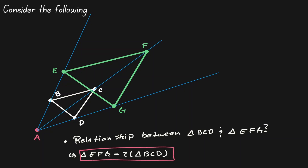But let's understand why that is true. We started by measuring the distance from A to B, and then we doubled that distance. And that was the same thing that happened from A to D — we measured the distance and then doubled it. And that's the same thing that happened from A to C — we found that distance and then doubled it. Because the distance got doubled, the dimension of the object got doubled as well.